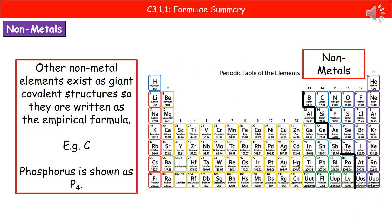It's not just metals that require the empirical formula — there are other non-metal elements that exist as giant covalent structures. Carbon, for example, which exists as a giant covalent structure, is written as just C on its own. However, phosphorus is a slightly different case: it is always written as P with a subscript 4.